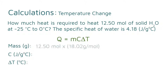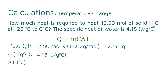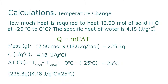First, for mass: you take 12.5 moles and multiply by the molar mass of water to get grams, giving you 225.3 grams of water. Specific heat is given as 4.18. For the change in temperature, you're starting at negative 25 degrees Celsius and moving to 0 degrees Celsius — final minus initial gives a temperature change of positive 25 degrees Celsius. Plugging these three numbers into the equation gives 23,543.85 joules, which you can round to 23,500 joules.